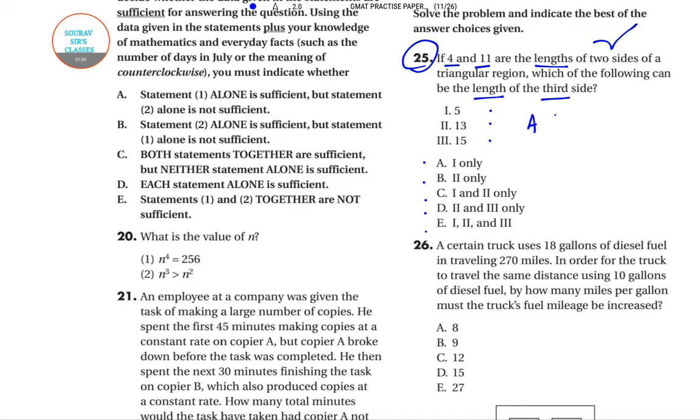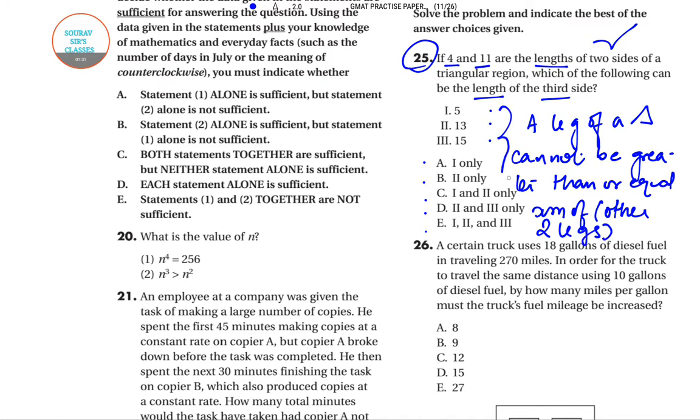Now, a leg of a triangle cannot be greater than or equal to the sum of the other two legs. If we follow this particular condition, this principle actually eliminates both option 1, because 11 is greater than 5 plus 4, and option 3, because 4 plus 11 equals 15. Therefore, 2 is the only acceptable length.